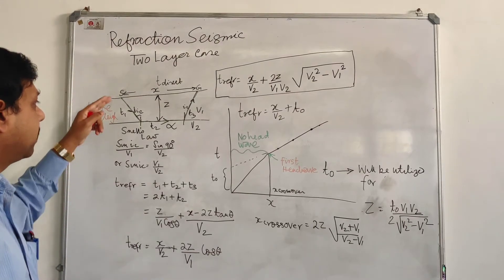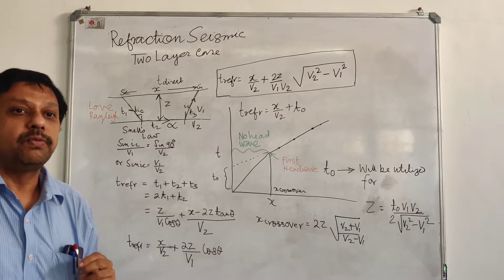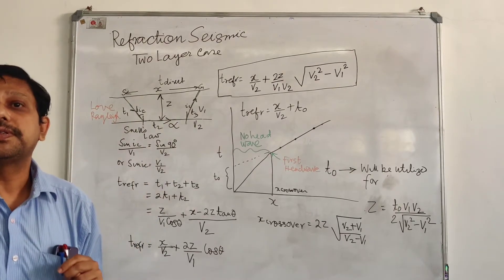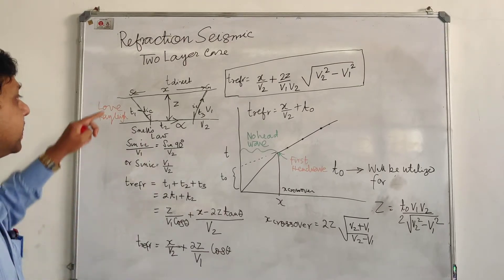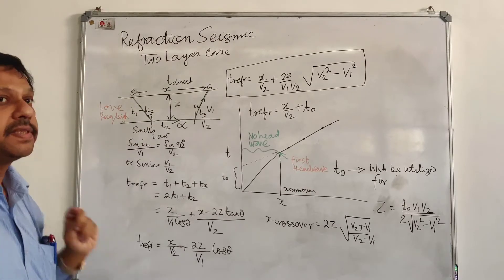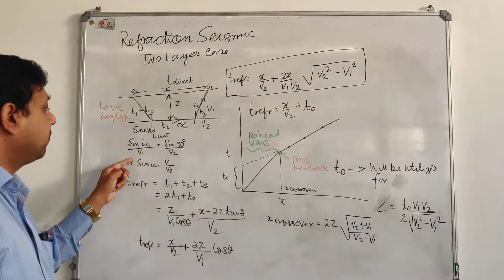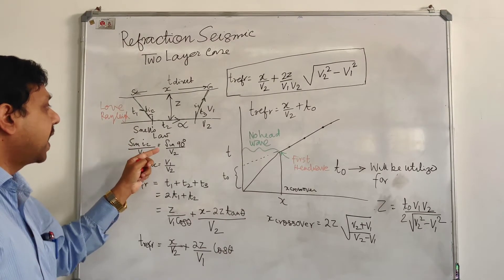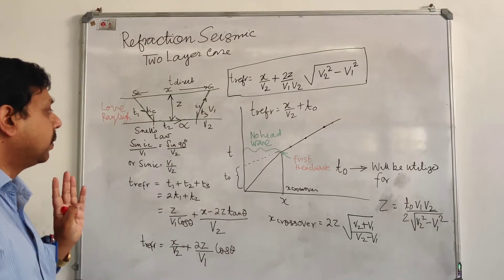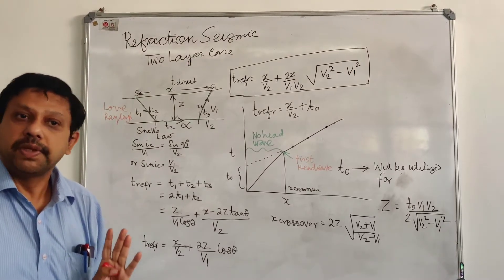Snell's law is sine of theta 1 by sine of theta 2 is equal to V1 by V2, where V1 is the velocity of the first layer, V2 is the velocity of the second layer. Since there is a refraction here, that means the angle of incidence is a critical angle. Sine Ic by V1 is equal to sine 90 degrees by V2. So sine Ic is equal to V1 by V2, and Ic is equal to sine inverse of V1 by V2.